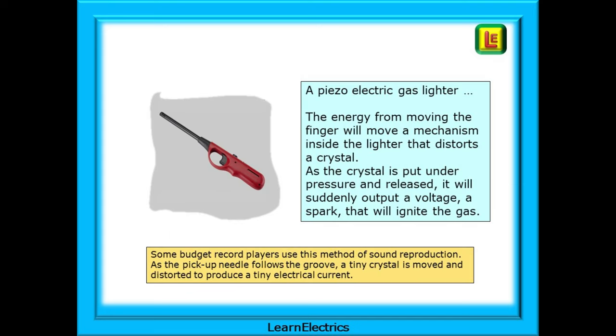A piezoelectric gas lighter is another but much different example of movement creating electricity. The energy from moving the finger will move a mechanism inside the lighter that distorts a crystal. As the crystal is put under pressure and released, it will suddenly output a voltage, a spark, that will ignite the gas. Some budget record players use this method of sound reproduction. As the pickup needle follows the groove, a tiny crystal inside the head is moved and distorted to produce a tiny electrical current that can be amplified into music. Not high fidelity, but it works.